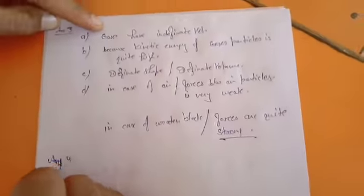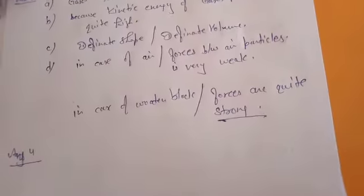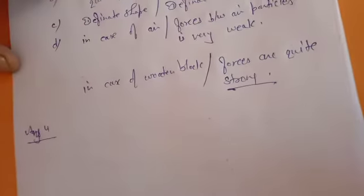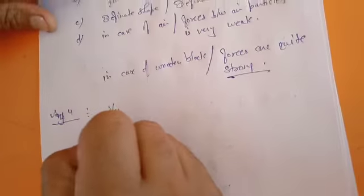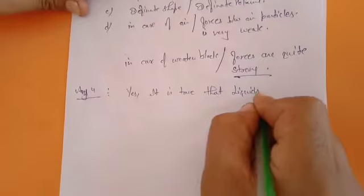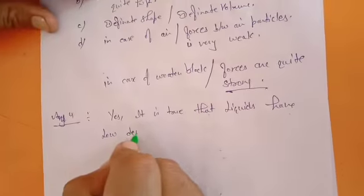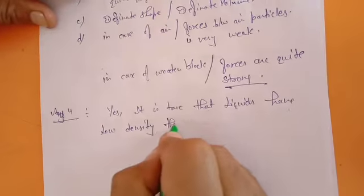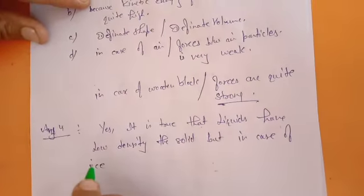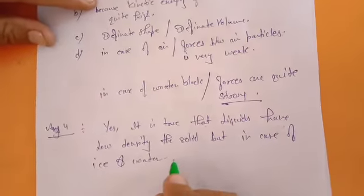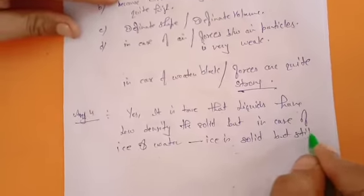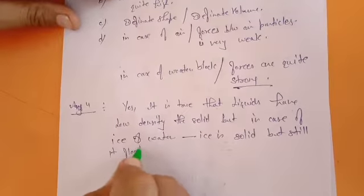Now answer four. The question says that liquids generally have lower density compared to solids, but you must have observed that ice floats on water — find out why. The answer is: yes, it is true that liquids have lower density than solids. But in the case of ice and water, ice is a solid and yet it still floats on water.